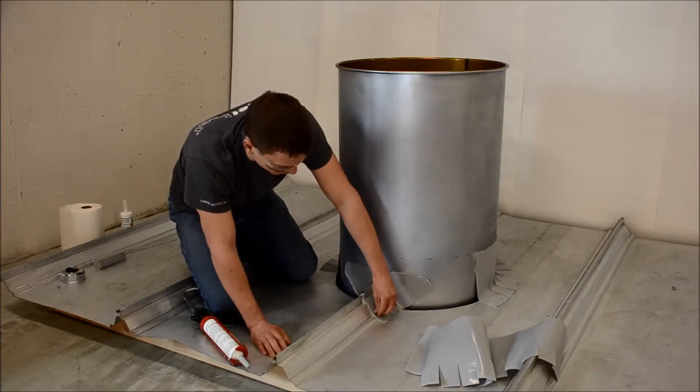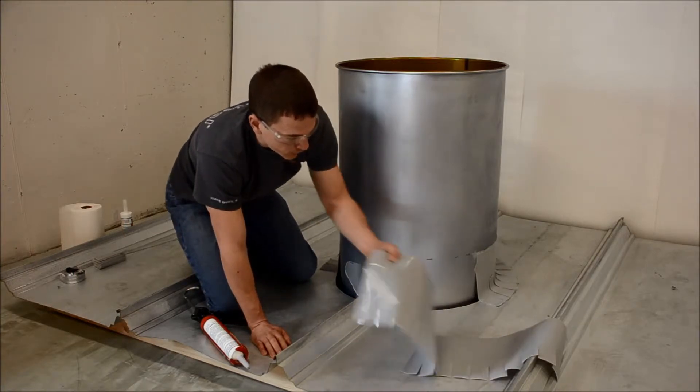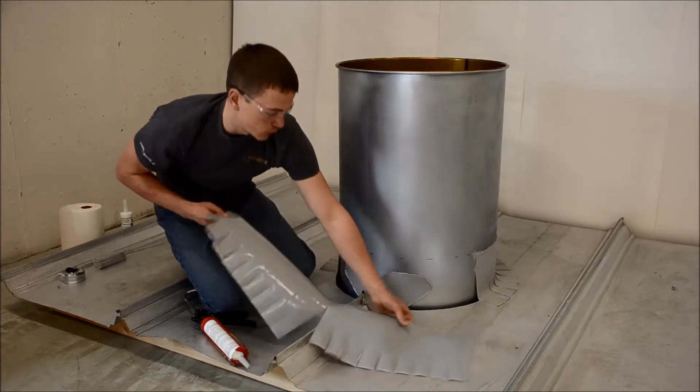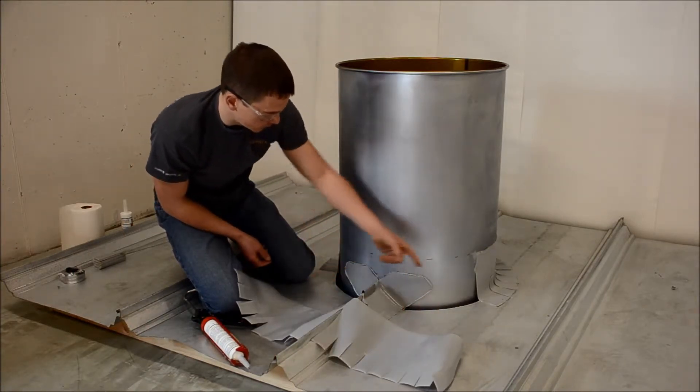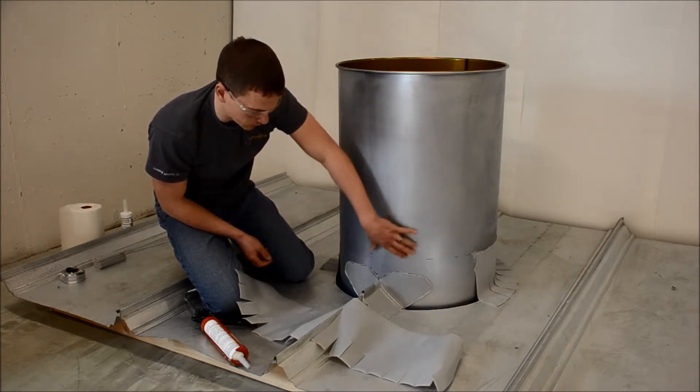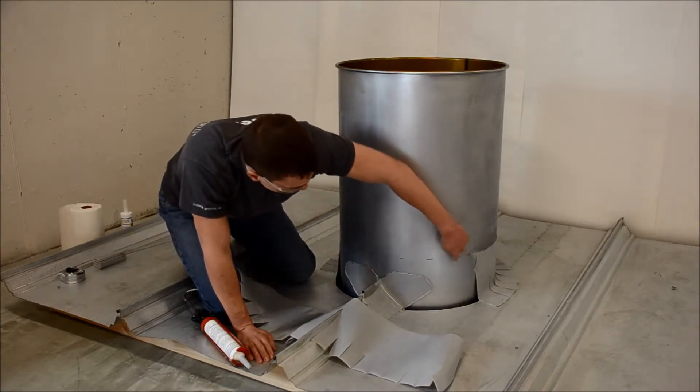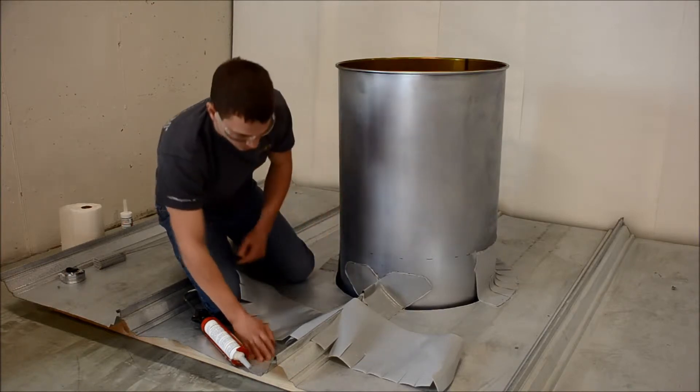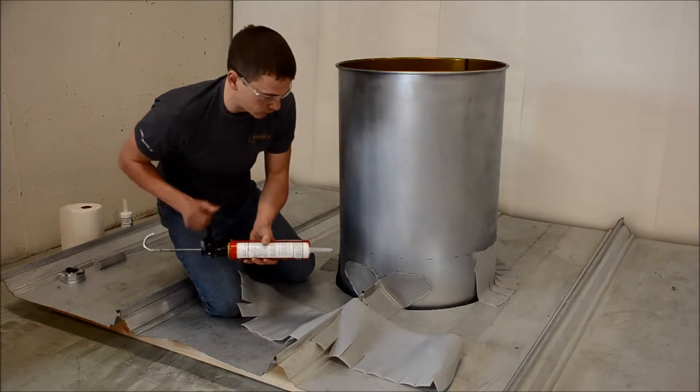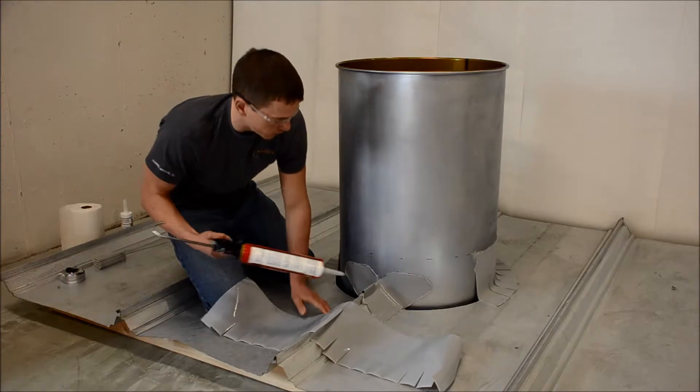Now that I have a satisfactory seal on that, I can move on to installing the piece which we have cut to go around the perimeter of our penetration. Again here I've pre-marked with a sharpie where I need to apply the adhesive in order to install this piece of Immerseal.